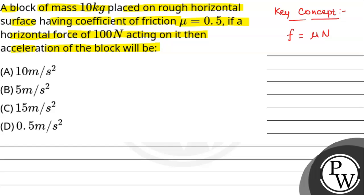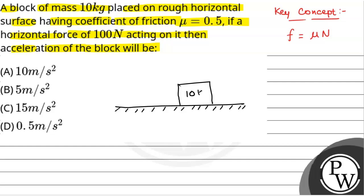We will see what is given in the question with the help of a figure. This is a rough horizontal surface and a block of mass 10 kg is placed on it. The coefficient of friction between the block and the table is equal to 0.5, and a horizontal force of 100 N is acting on the block. We have to find the acceleration of the block.